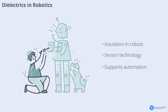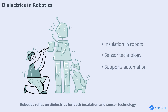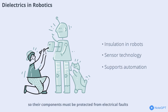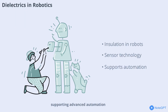Robotics relies on dielectrics for both insulation and sensor technology. Robots often operate in challenging environments, so their components must be protected from electrical faults. Dielectrics also enable precise control and feedback in robotic sensors, supporting advanced automation.